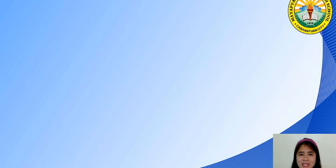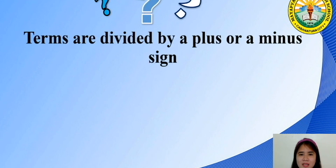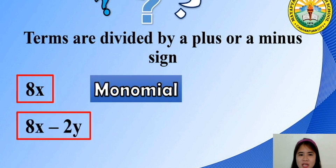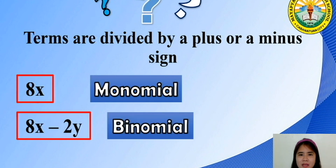How can we tell if a given polynomial is a monomial, binomial, trinomial, or multinomial? Always remember that the terms are divided by a plus or a minus sign. For example, 8x — since we don't see any plus or minus sign, it is considered one term, or monomial. However, the expression 8x minus 2y is a two-term expression because it is separated by a minus sign, therefore called a binomial.